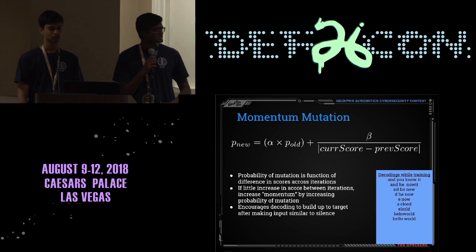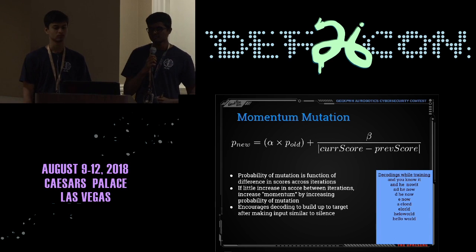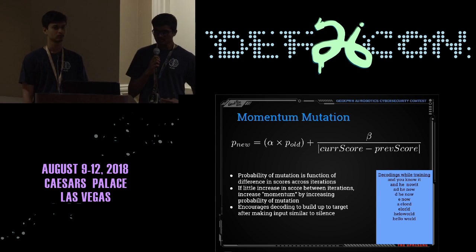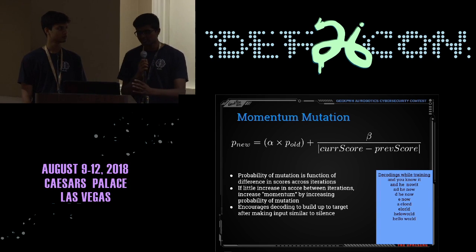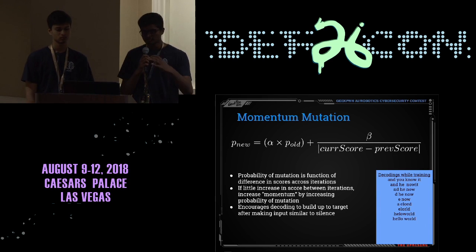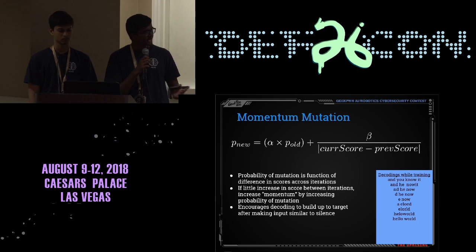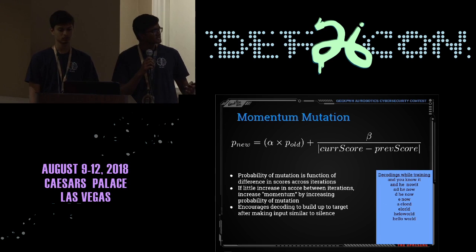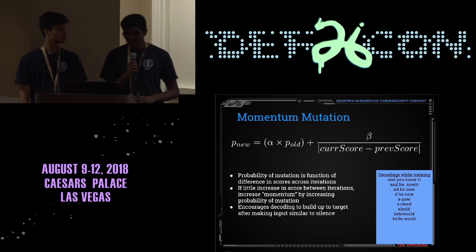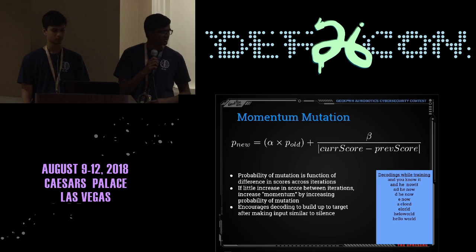This encourages the decoding to build up to the target after making the input similar to silence. As shown in the blue box on the right, our decodings during training first start with the original benign input, then slowly pare down the letters until we get to near silence. Through momentum mutation — by increasing the probability of mutation — we can add more letters, and the algorithm is finally able to reach our target of 'hello world'.